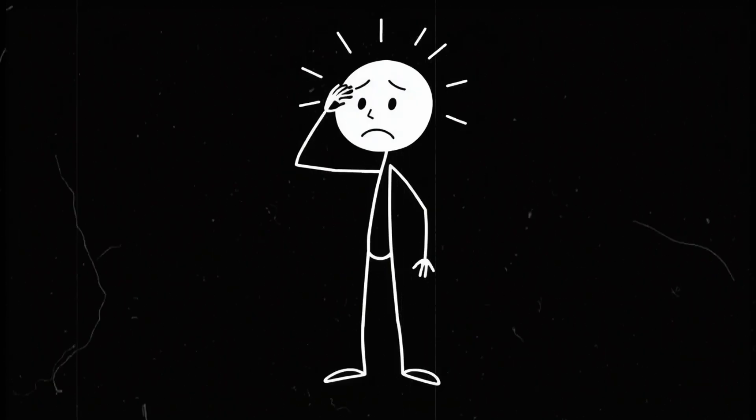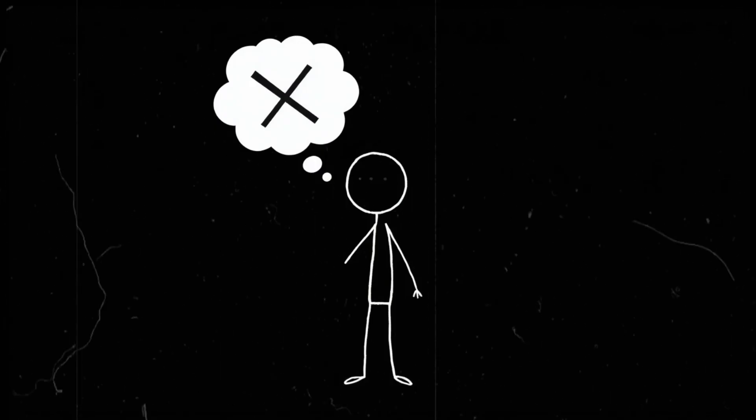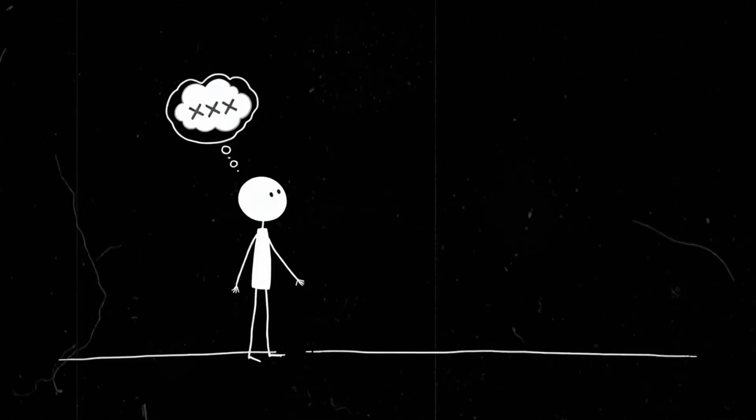You step outside, and the sun feels different. The air feels different. Everything feels wrong. And then it hits you. There are no clouds anywhere on Earth. Not a single fluffy cumulus. Not a dramatic storm front. Not even that weird, flat layer of stratus clouds that makes the sky look like an old Windows XP wallpaper. Just nothing.